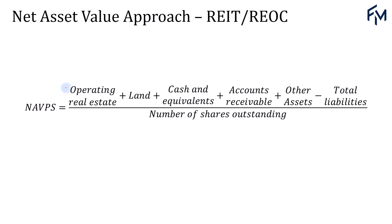The net asset value per share is the difference between a real estate company's assets and its liabilities, all taken at current market values instead of accounting book values, and then divided by the number of shares outstanding.